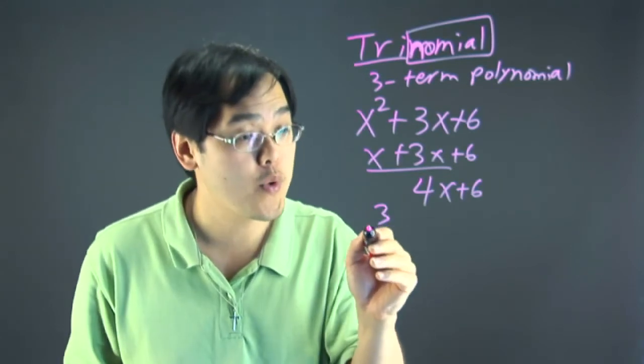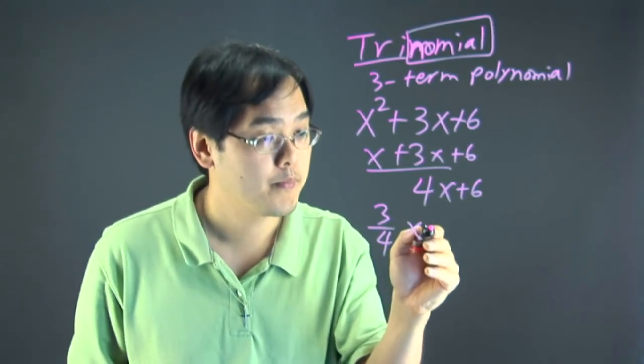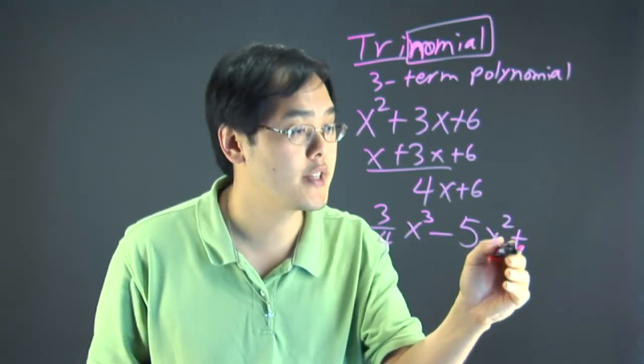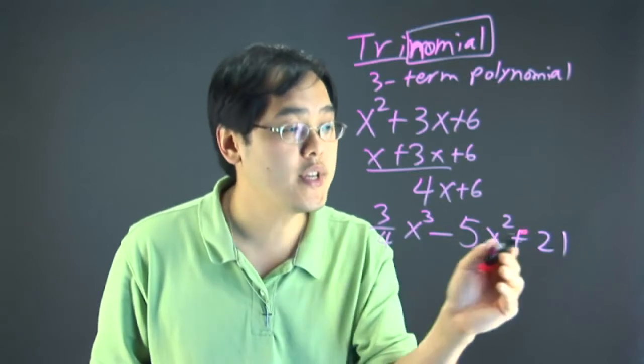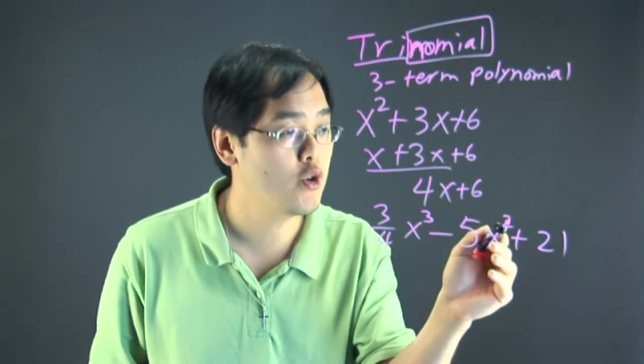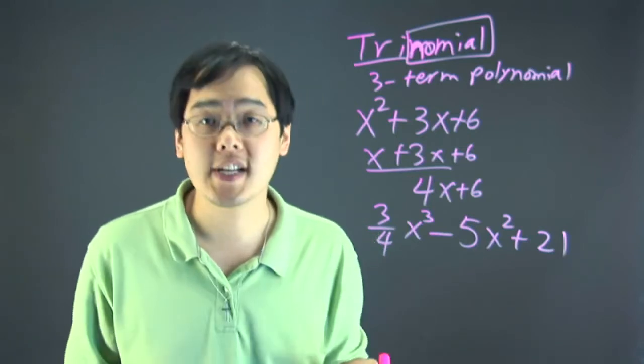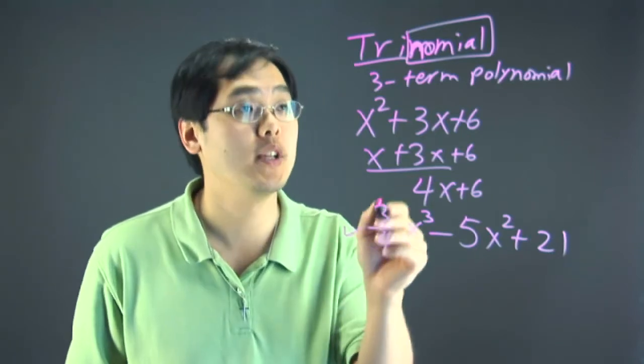But, if you have 3 quarter x cubed minus 5x squared plus 21, you have three distinct terms because you have x cubed, x squared, x to the power of 0. Those are all distinct terms, so this is an example of a trinomial.